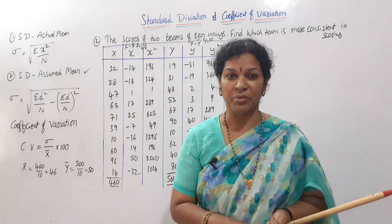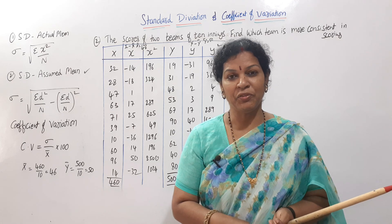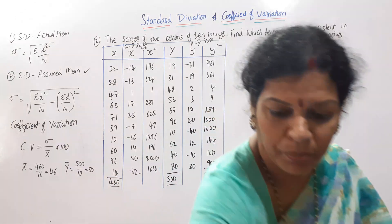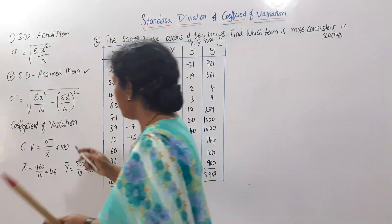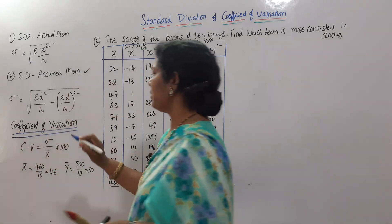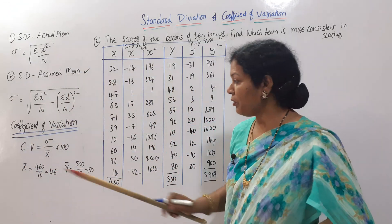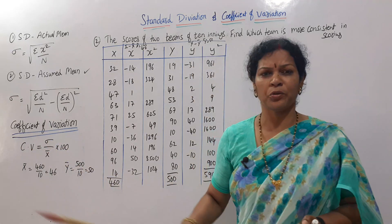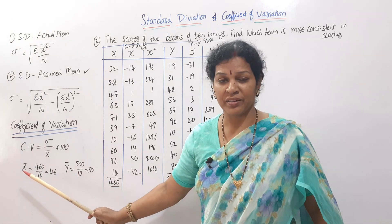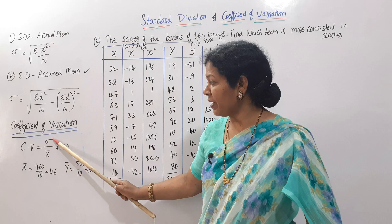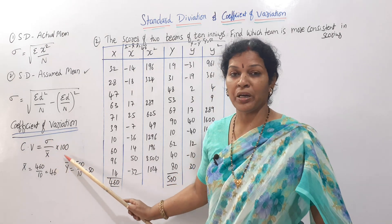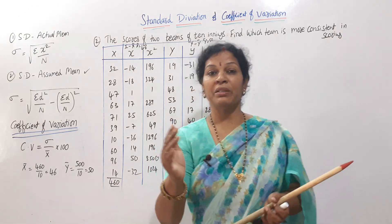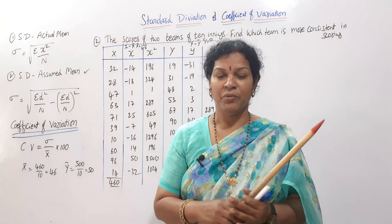The CV formula is: coefficient of variation equals rho by x̄ into 100, where rho means standard deviation and x̄ means mean. So CV = (standard deviation / mean) × 100. We use CV to compare one variable with another variable.